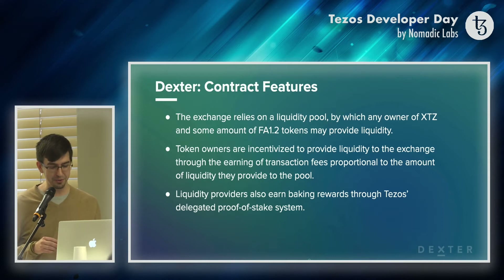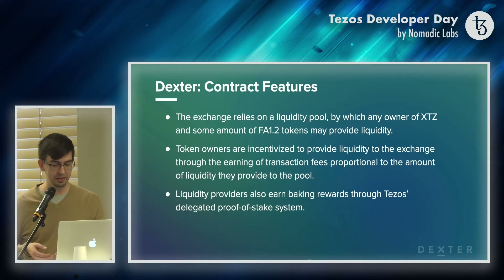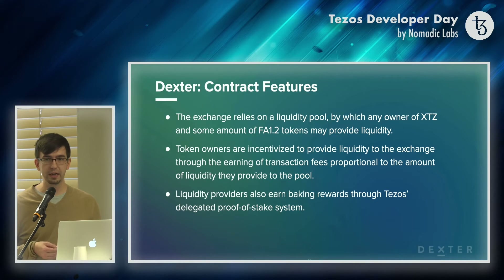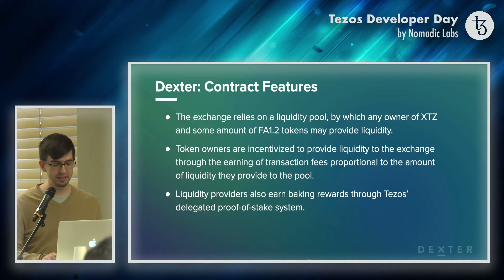This transaction fee does not belong to the contract or to CamelCase. It belongs to the people that have provided liquidity. When you place XTZ or FA1.2 on an exchange, you're given what we call a liquidity token that represents your ownership of the entire pool of tokens on the Dexter exchange. You can then redeem those tokens and be rewarded a certain amount of XTZ and FA1.2. How much you get depends on the exchange rate and how many transactions have occurred. There's also the potential to earn baking rewards from any XTZ you've placed on the Dexter contract.